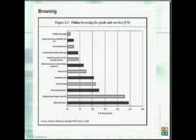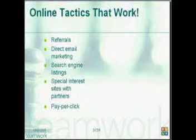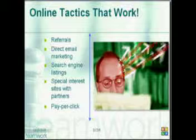This is an example of an online browsing for goods and services research report conducted back in 2000, but the numbers have remained largely the same. You can see categories from electricity and gas supplies down to media, books, healthcare, music, CDs, and holiday and travel leisure. Some of the tactics that work include referrals, direct email marketing, search engine listings like SEO and SEM, special interest sites with partners for link sharing, and pay-per-click.